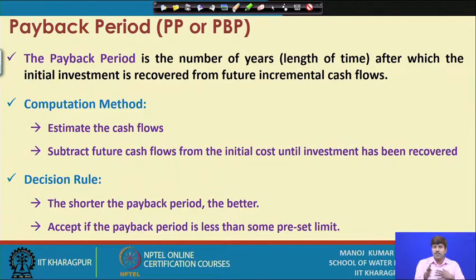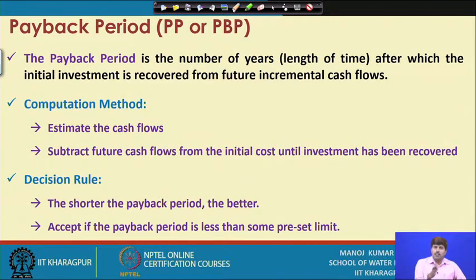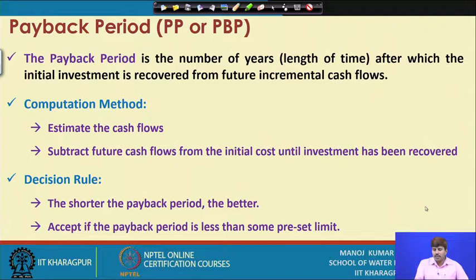If I want to recover my investment in 5 years and a project proposes 6 years, I am not going to consider it — so project C gets cancelled. Projects A and B both recover the investment in less than 5 years: one in 3.5 years and another in 4.8 years. Although both can be accepted on my criteria, proposal A appears better because of the shorter payback period. That is how decisions are made in payback analysis.